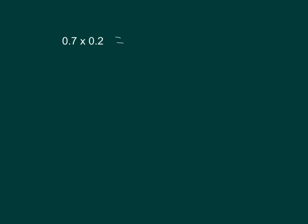Seven-tenths times two-tenths equals what? Let's write that out. Fourteen-hundredths. Written as a decimal: 0.14.